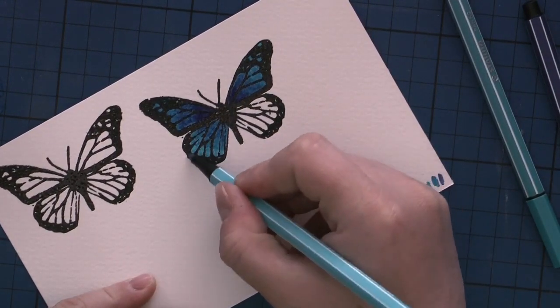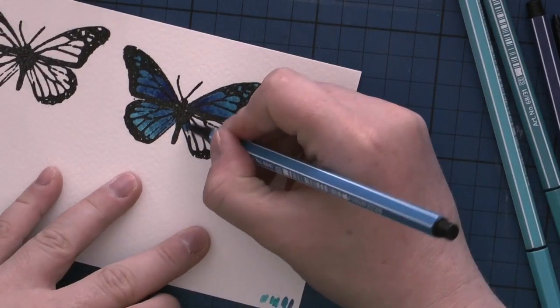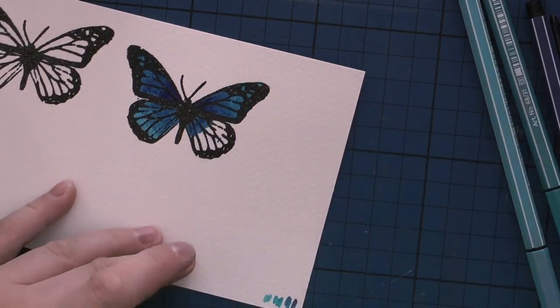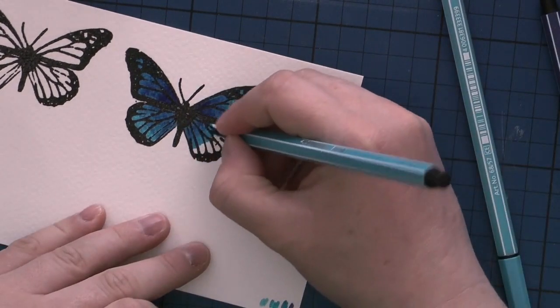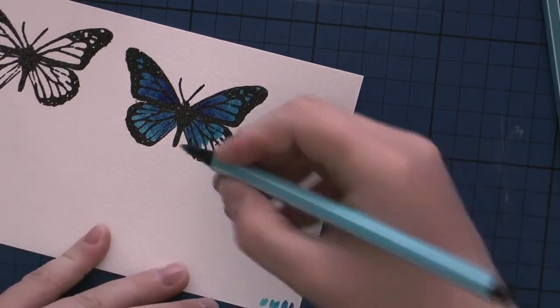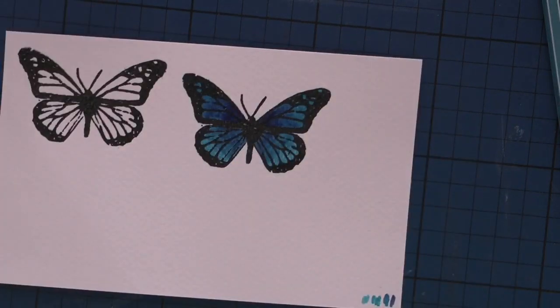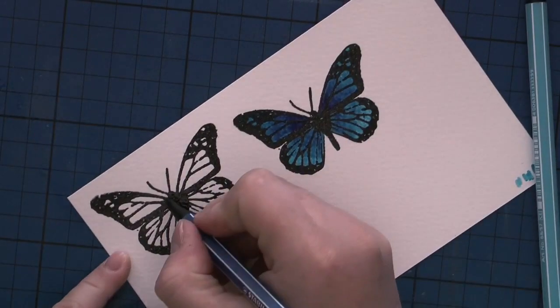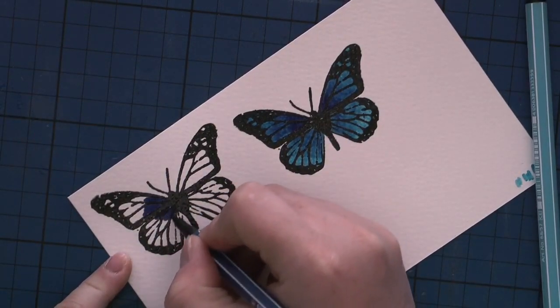As you can see, they blend really nicely together. After I colored the butterflies in, I tried to color them in a more or less similar way. I fussy cut them close to the edge of each butterfly, so when I put them together back to back they fit perfectly.